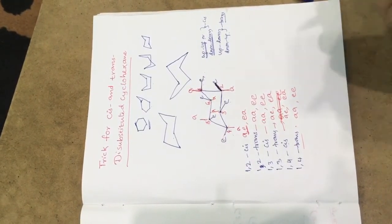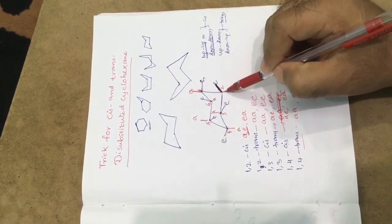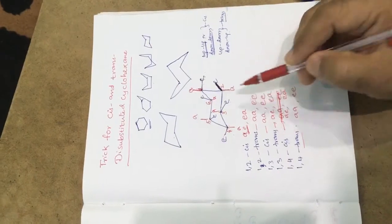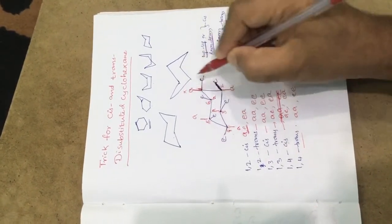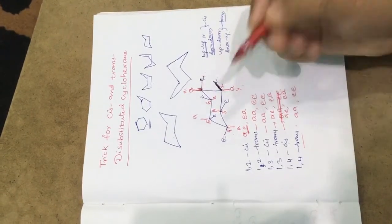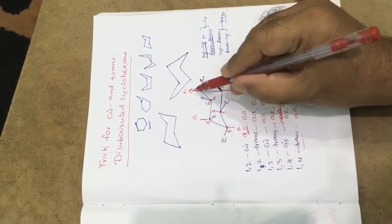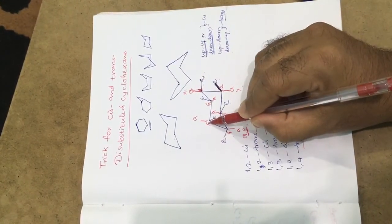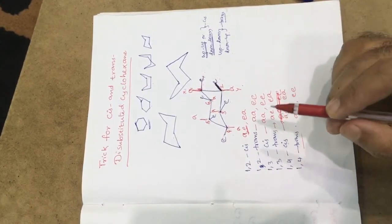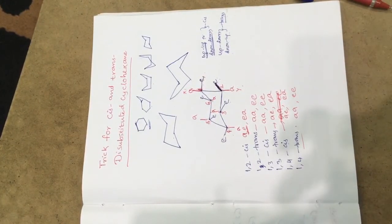In summary: up-up or down-down is cis; up-down or down-up is trans. Keep in mind that the numbering depends on the substituents. The bulkiest substituent should be at the equatorial position and the smaller group at the axial position — that is the most stable conformation. Thank you very much.